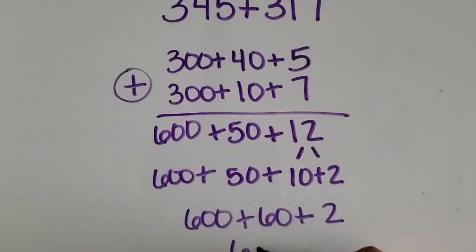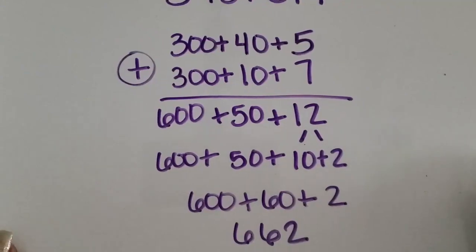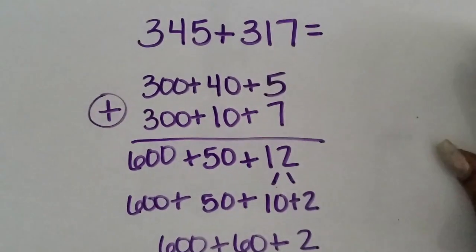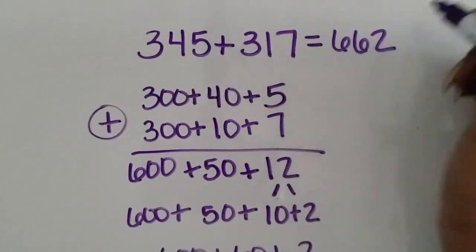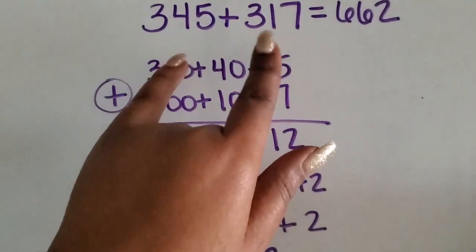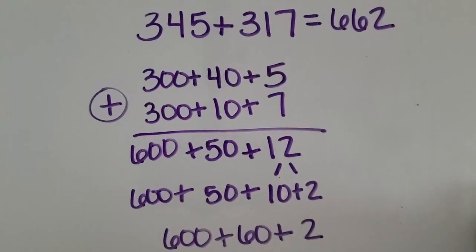So my sum is six hundred sixty-two. The sum of three hundred forty-five and three hundred seventeen is six hundred sixty-two. We added two three-digit numbers together using expanded form.